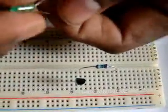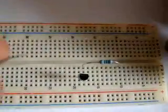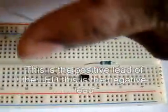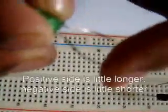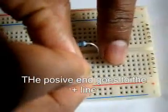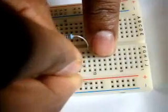This is the LED to be used. This is the positive side of the LED. This is the negative side. Positive is still longer, negative is still shorter. So we put it like this on the positive side, only the positive part of it.